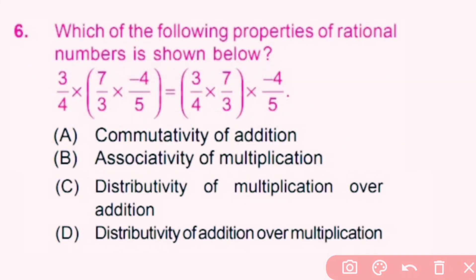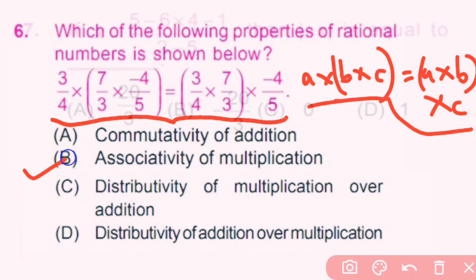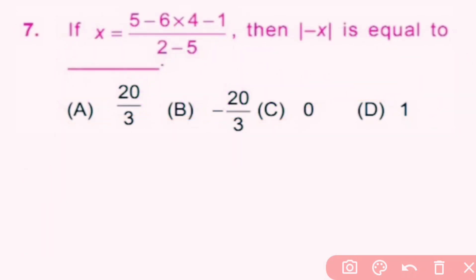Question 6: Which of the following properties of rational numbers is shown? This property is the same as the associative property of multiplication, so option B is the correct answer.